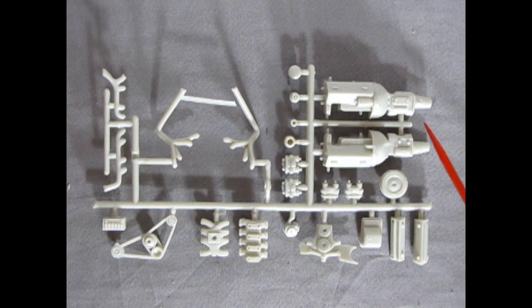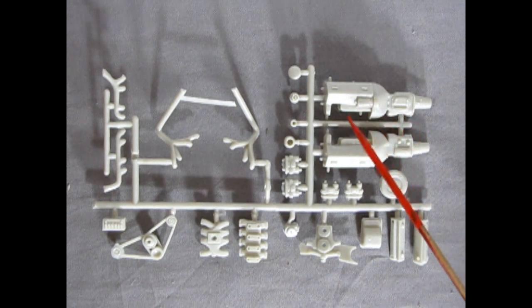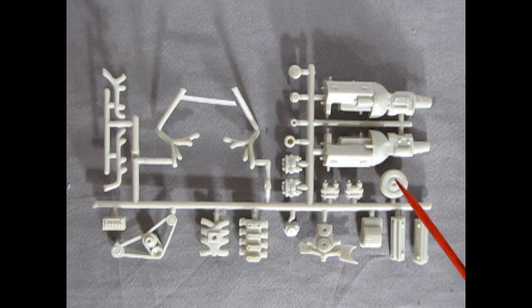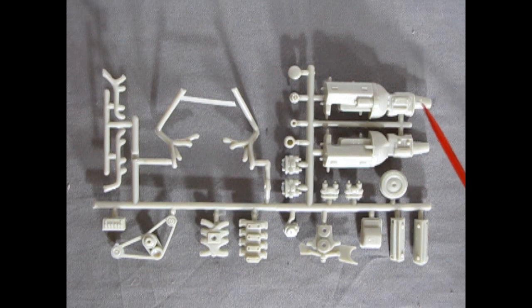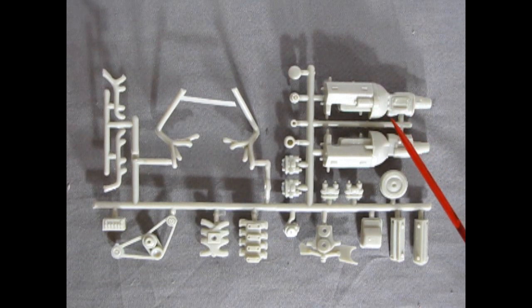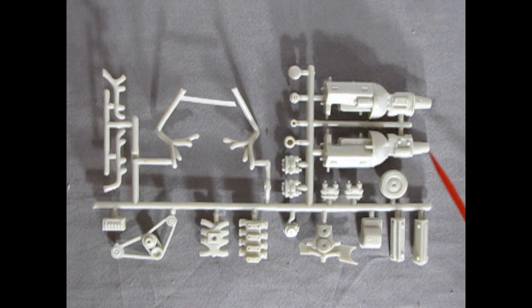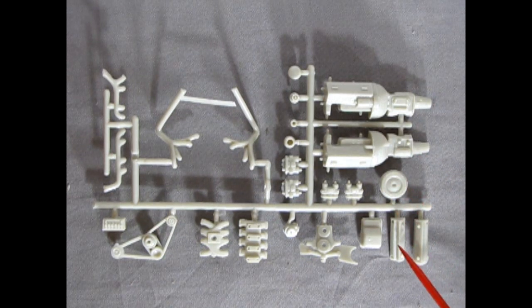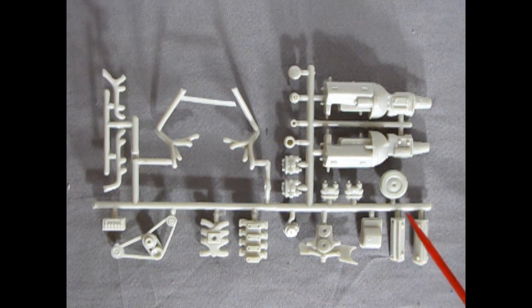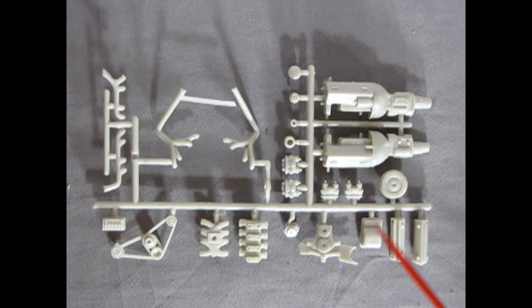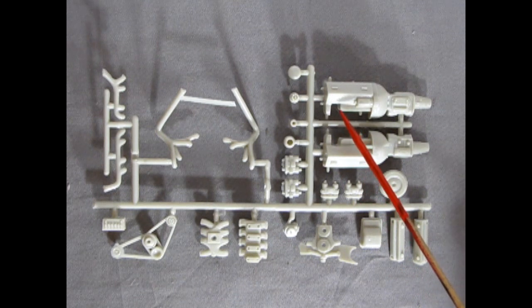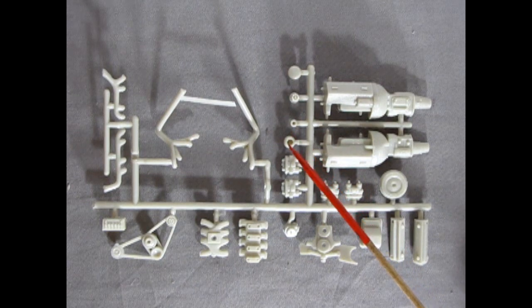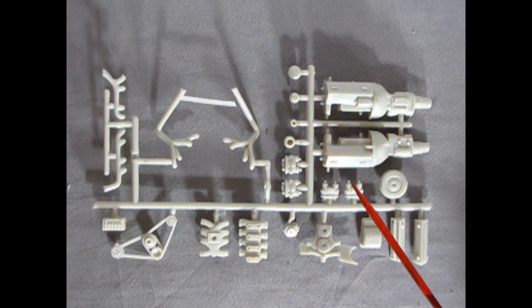Alright, so now here we have the Buick 455. Or the 401 cubic inch nail head. And it's not really too clear as to which is which. But anyway. It looks like here we have a standard transmission. And we've got our air cleaner sitting here. As well as our cylinder heads. The oil pan which is shortened. Because this is again with the metal axles going through the bottom of the engine block. And then we've got our distributor. And some of the other components under here for our engine.